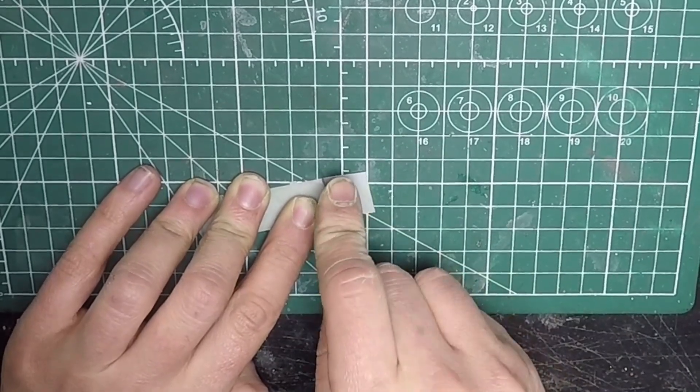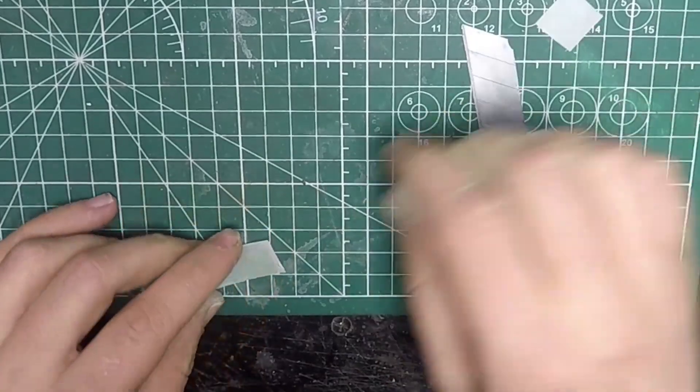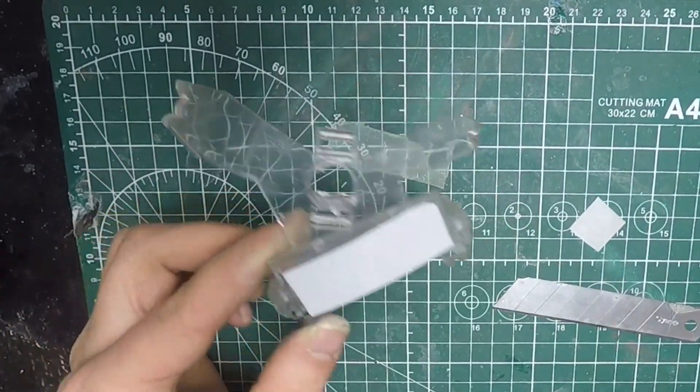You need a blade, thin plastic and hands. I make the same shape and throw the old junk away.